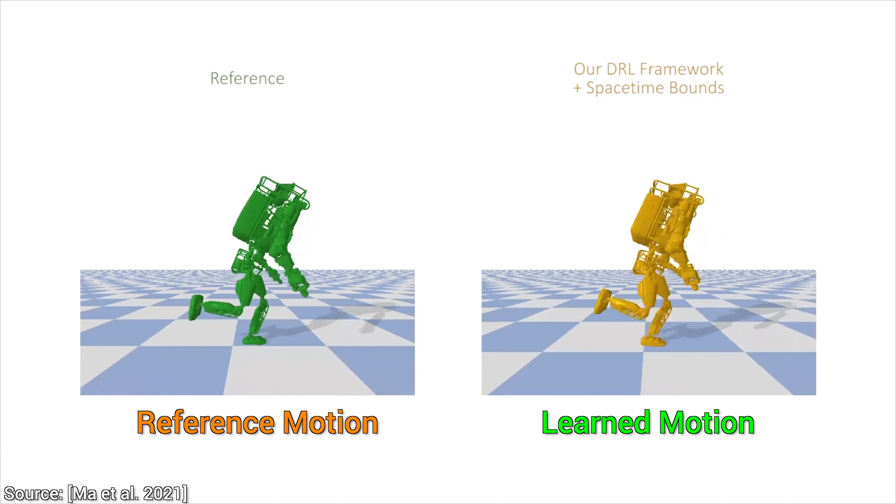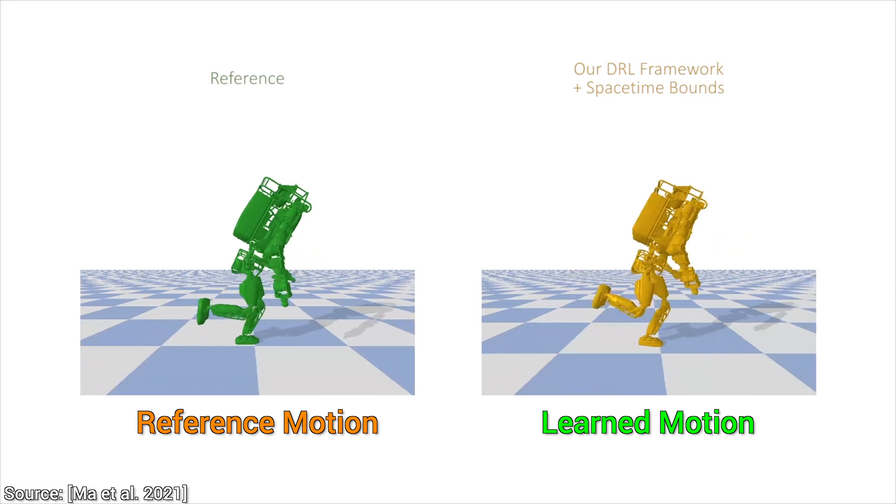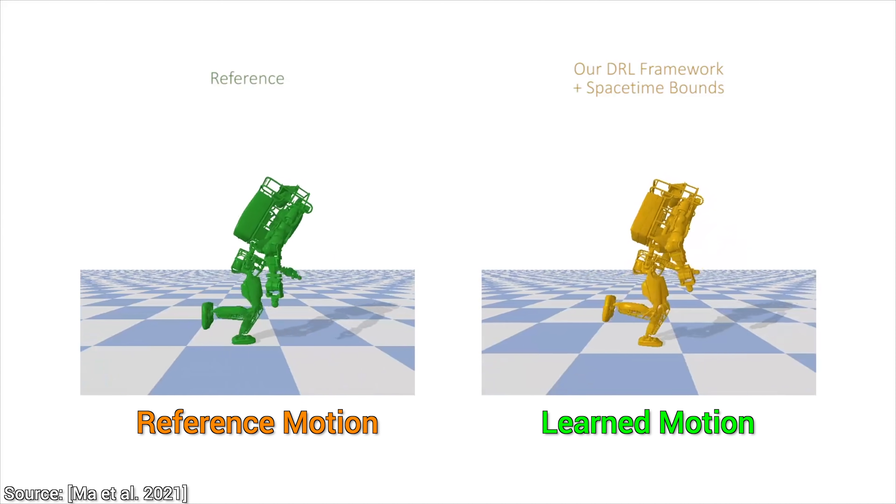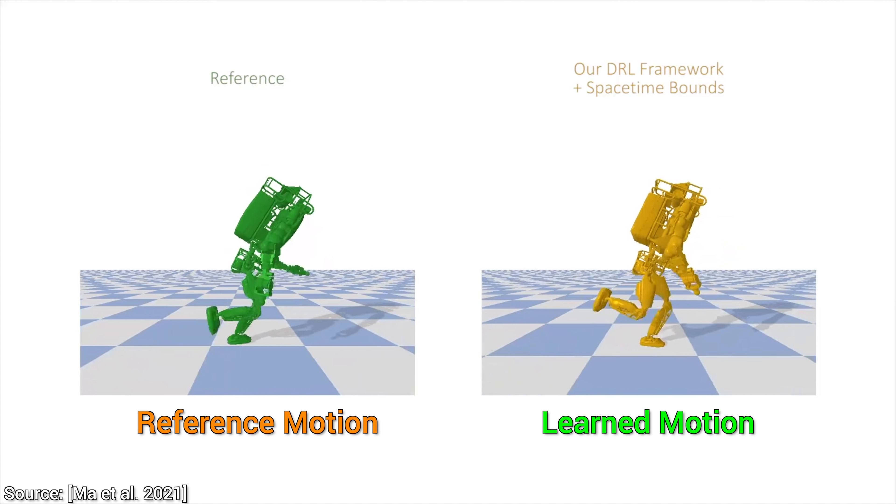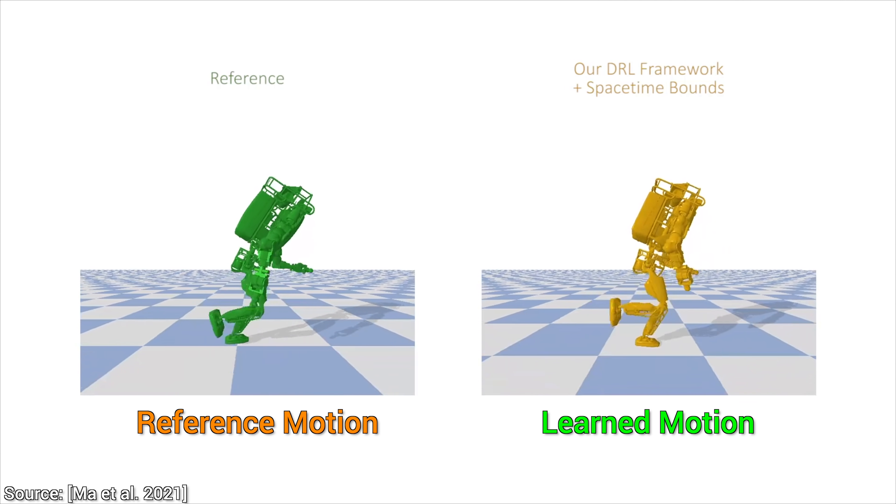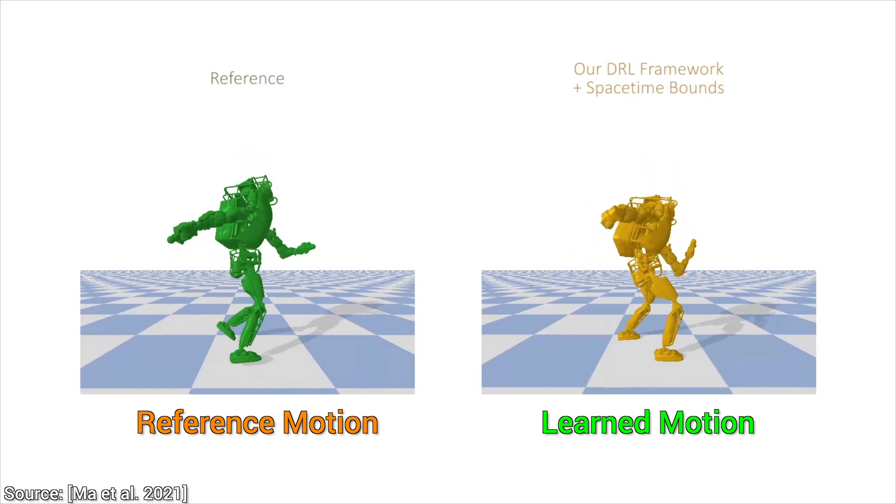These space-time bounds also help us retarget the motion to different virtual body types. It also helps us salvage really bad quality reference motions and make something useful out of them.